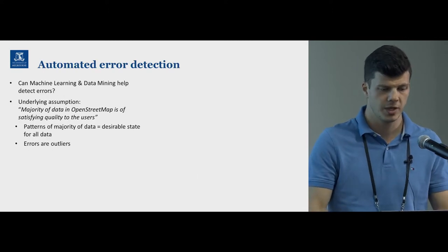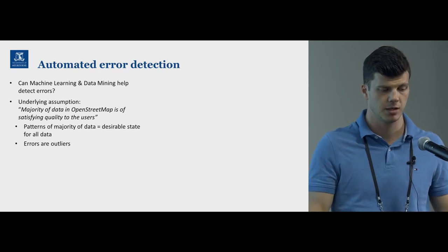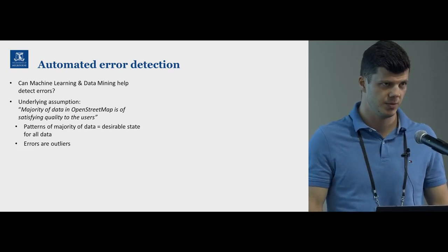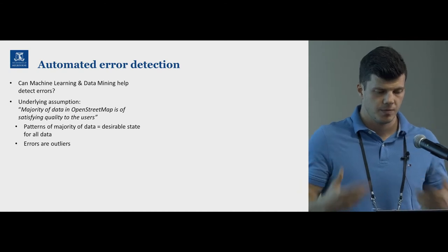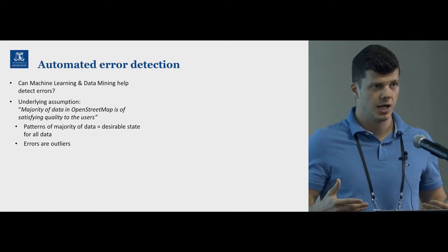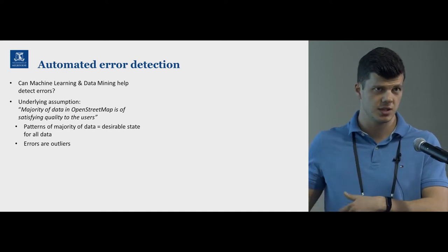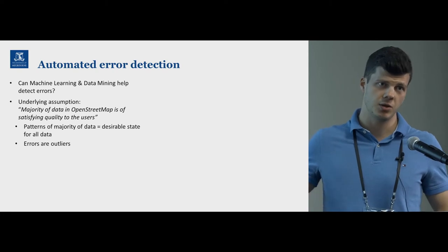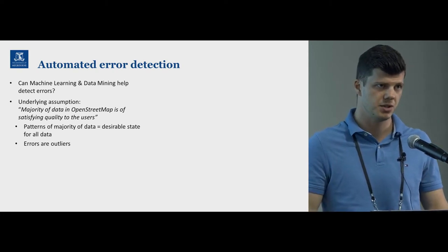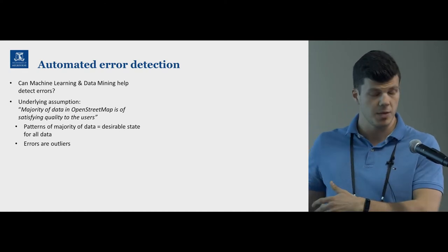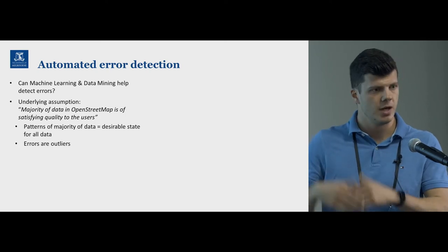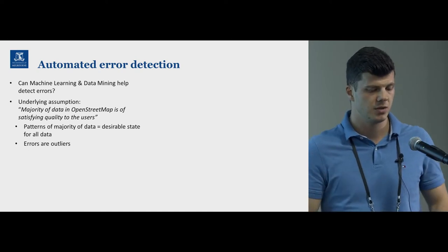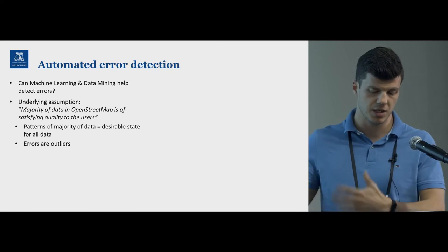So how can we automate this process — can we use machine learning and data mining in detecting errors? I think we can, but there is one major assumption that has to be made with OpenStreetMap data. OpenStreetMap is now a global dataset and we are very unlikely to collect ground truth for all of this data to train our algorithms. So we have to assume that the majority of data already in OpenStreetMap is of good enough quality, and that errors, if present, are a minority — essentially outliers — so patterns from the majority can be recognized as desirable trends.